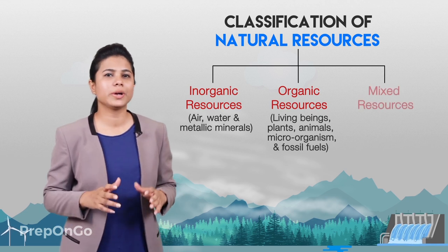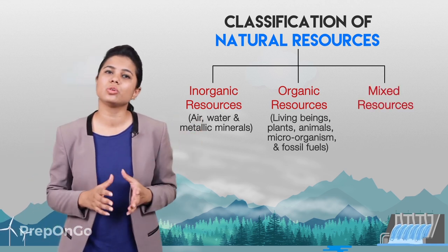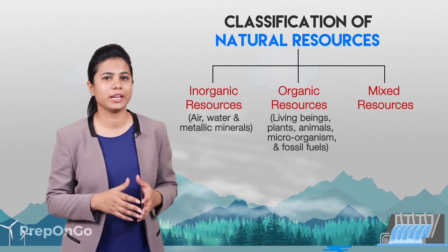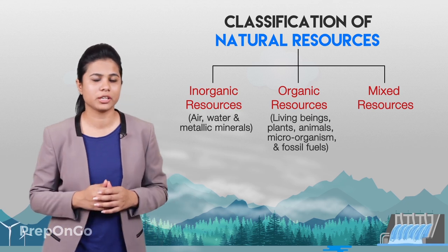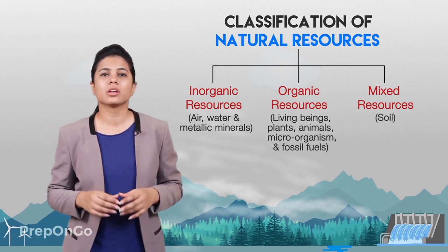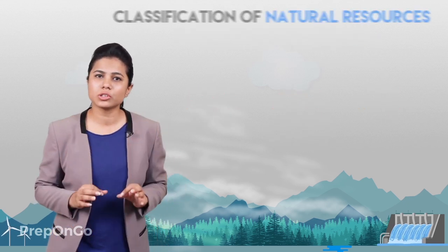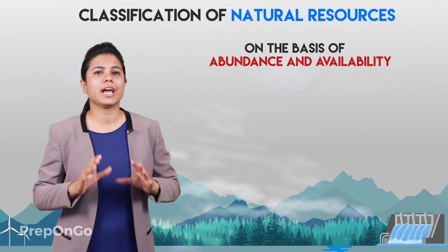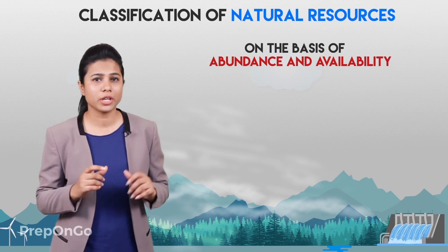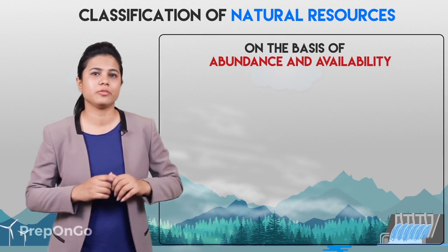The third is mixed resources, which include substances that are both organic and inorganic — for example, soil. We can also classify natural resources on the basis of their abundance and availability.